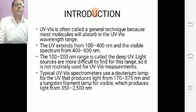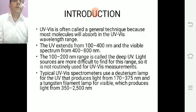Typical UV-visible spectrophotometers use a deuterium lamp for UV, which produces light from 170 to 375 nm, and a tungsten filament lamp for visible, which produces light from 350 to 2500 nm.